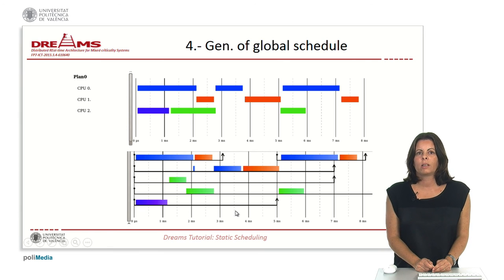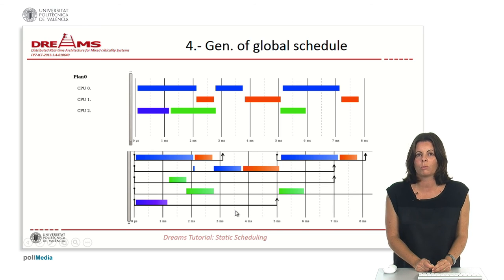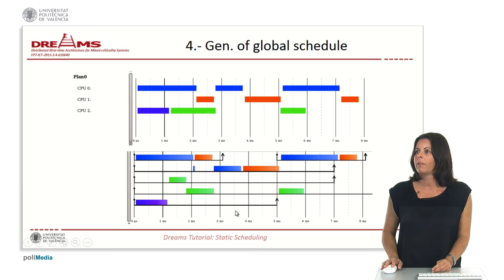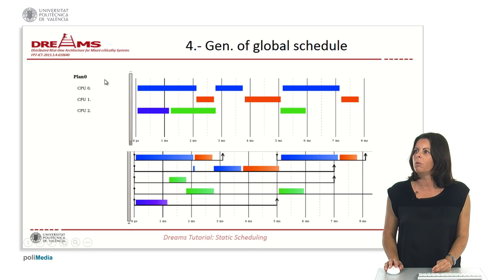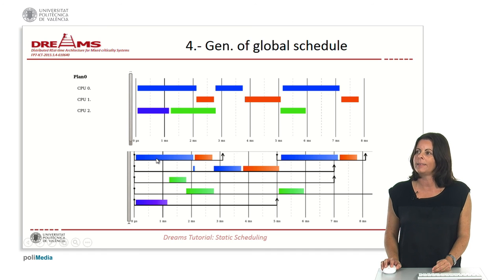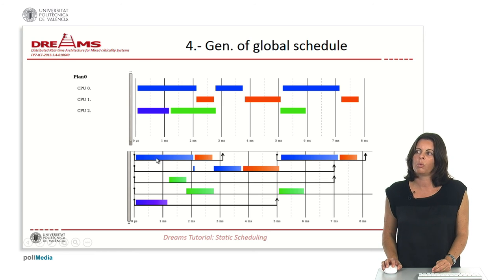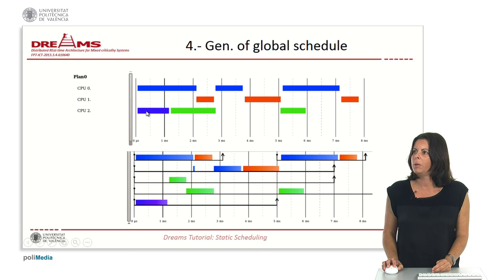Concrete is able to generate not only the scheduling table in the configuration file, but also a chronogram so we can see the behavior of the tasks and partitions. In this example we have three CPUs. We have the view of the global schedule for each CPU, and we can also view the execution chronogram of the end-to-end flows with deadlines, periods, and task instances belonging to each end-to-end flow. Blue tasks belong to one partition, red tasks to another, and green tasks to another. We can see how the CPU executes different partitions at different instants of time.